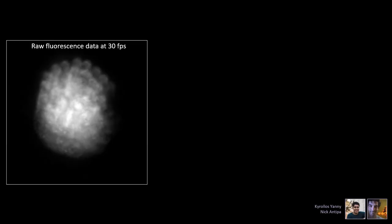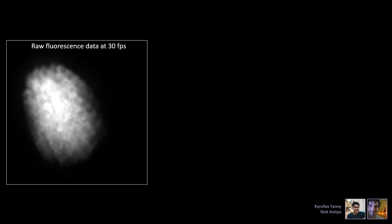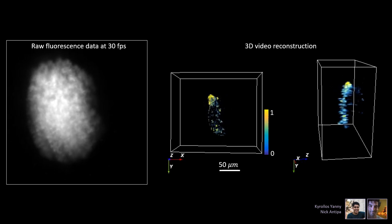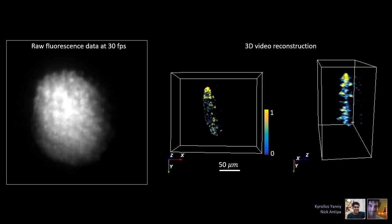That means we can take a single 2D video like this that sort of just looks like scattered mess and reconstruct 3D images. In this case it was in a microscope where we're looking at these little tardigrades or water bears from UCSF.